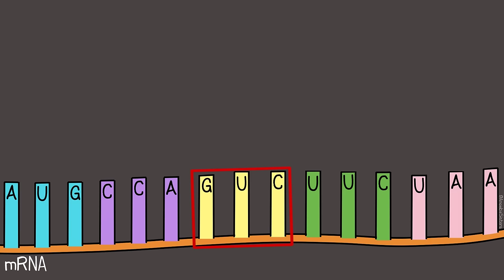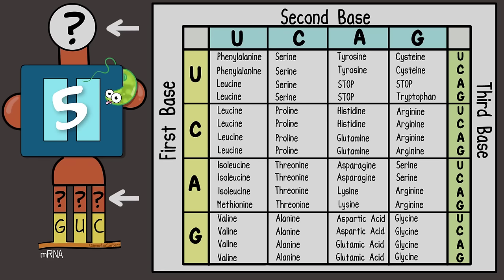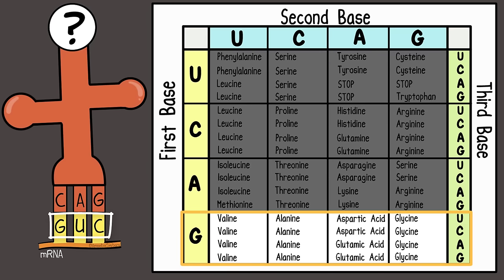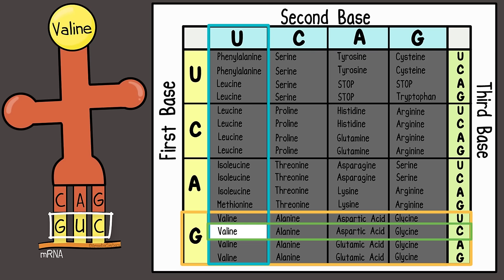The third codon is GUC. This time we need you to determine the tRNA anticodon and also the amino acid that tRNA would be carrying. Pause the video to determine those. The anticodon, based on the base pairing rules, would be CAG. But we use the mRNA codon for the codon chart. When you used it, you should have gotten the amino acid valine.